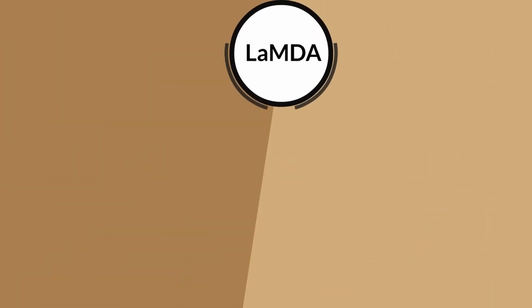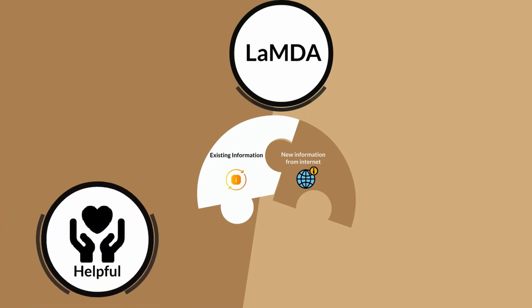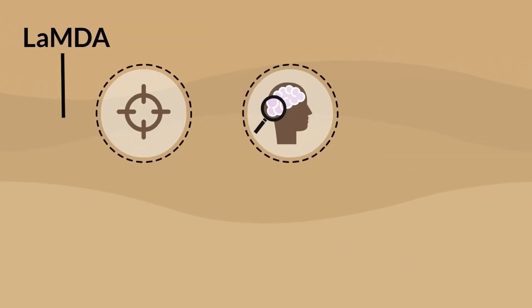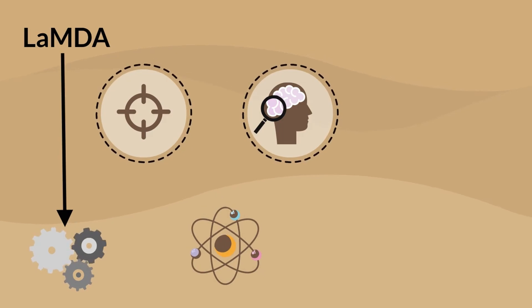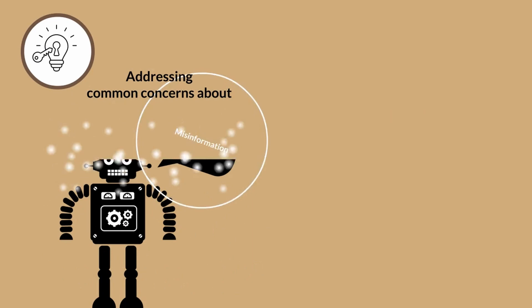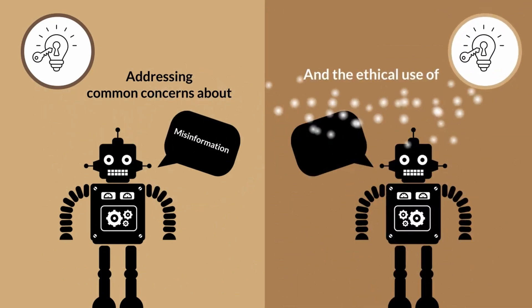It is this targeted design and training approach that allows Lambda to generate responses that are not only contextually aware, but also grounded in real-world information, addressing common concerns about misinformation and the ethical use of AI in conversations.